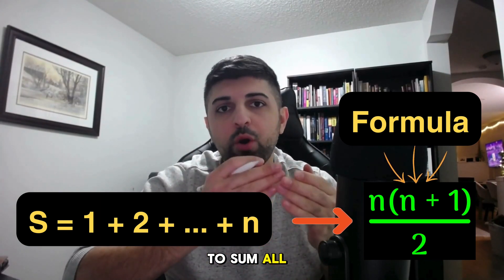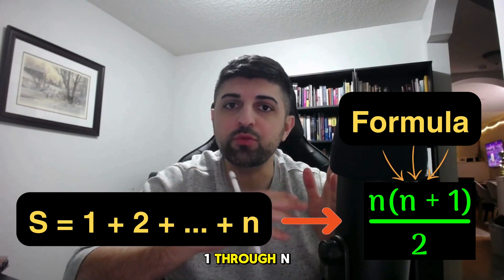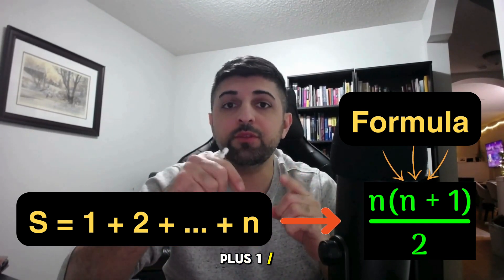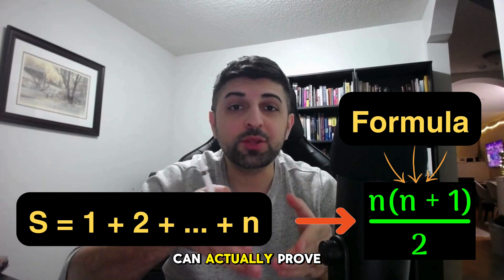There's a formula when you're trying to sum all of the natural numbers 1 through n. The formula goes n times n plus 1 divided by 2. Is there a way that we can actually prove this formula?